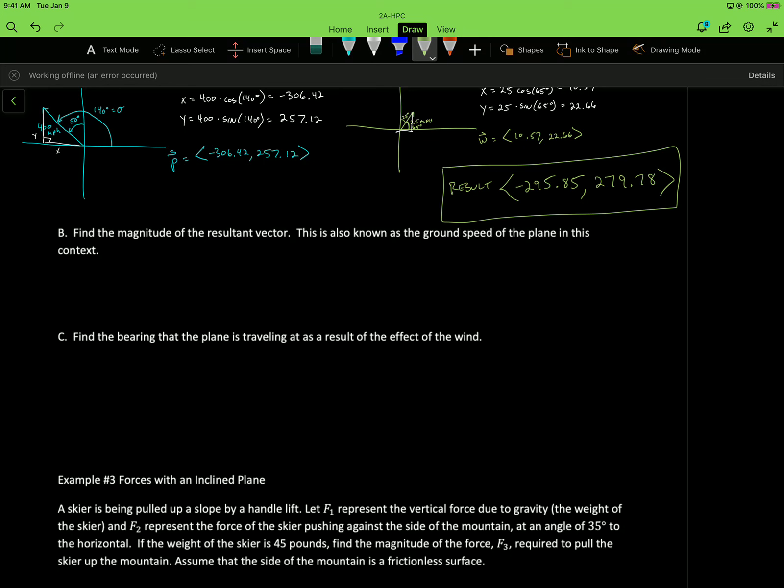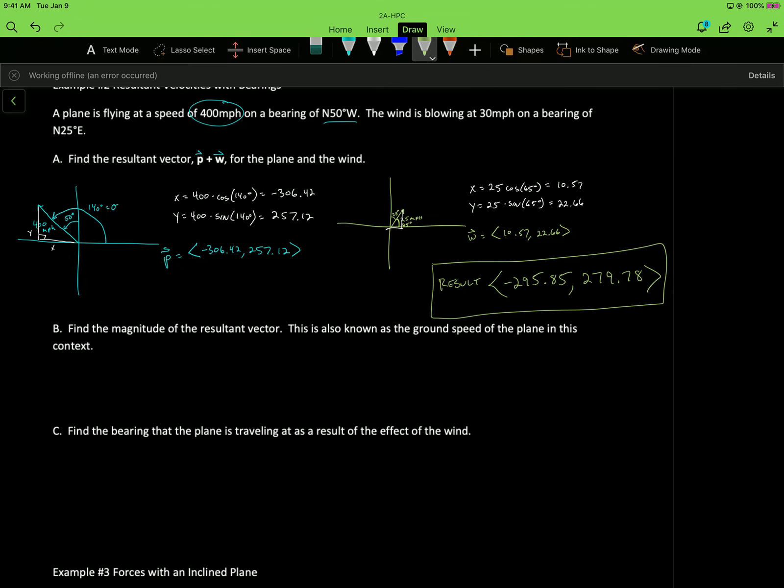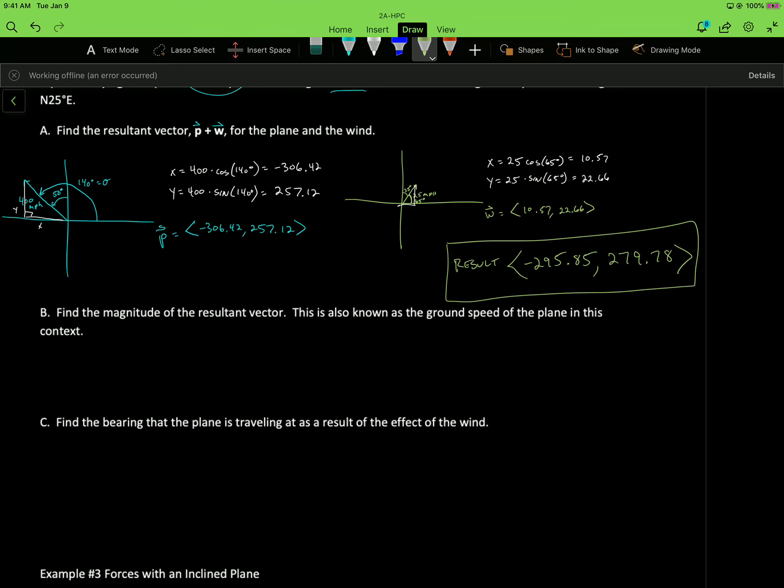Find the magnitude of the resultant vector. That's also going to be the ground speed of the plane. Again, that's that shadow moving on the ground of the plane. How fast is the plane actually moving relative to the ground? So our magnitude of this thing is going to be the square root of negative 295.85 squared plus 279.78 squared. So you can pause the video here, calculate that, and we'll see if we agree. So I'm getting about 407.19 miles per hour.